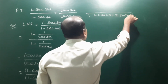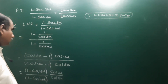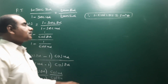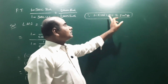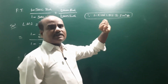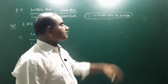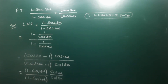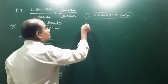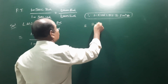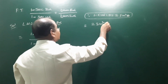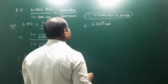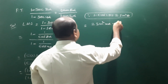Now we apply the formula: 1 - cos2θ = 2sin²θ. So for 1 - cos8α, the angle is 8α, meaning half of 8α is 4α, so 1 - cos8α = 2sin²4α. This goes into the numerator, multiplied by cos4α.